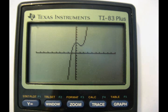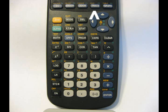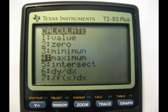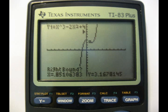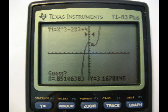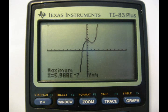For the maximum, you do the same thing. You go second, calc, and now you're going to press, in the calculate menu, press 4, and that will give you to find your maximum. And then you go to the left side of it. It will say left bound, press enter. Go to the right side. It will say right bound, press enter, and then guess, and press enter again, and that will give you your maximum value.